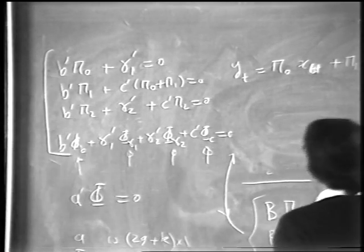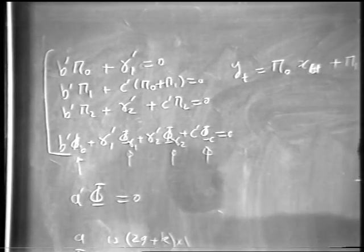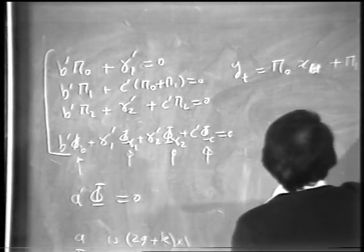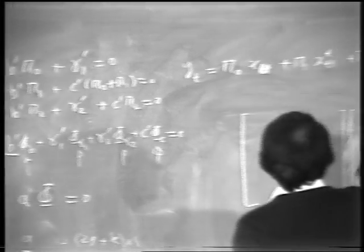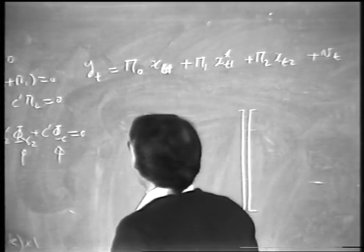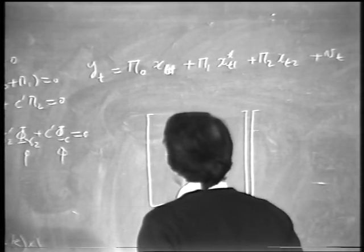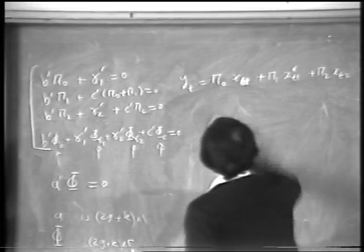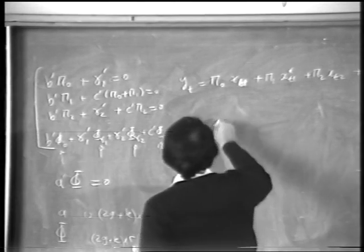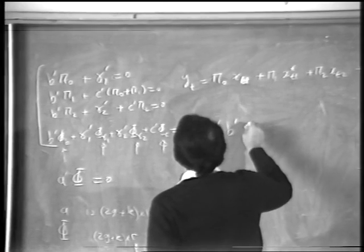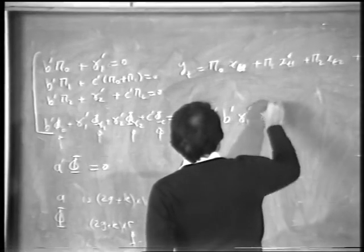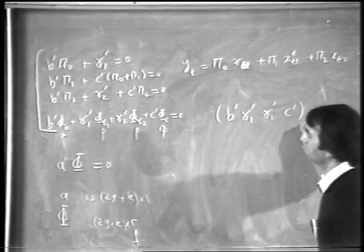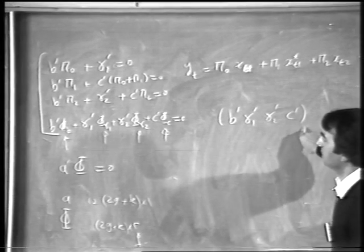So I can then have a system of equations which I can write as, in the case of the row or column vector, you can transpose them. But let me just write it the way I've got in terms of the rows. So I have got B prime, gamma prime 1, gamma prime 2, to C prime. Remember that is the A prime, which I'm interested. Okay?